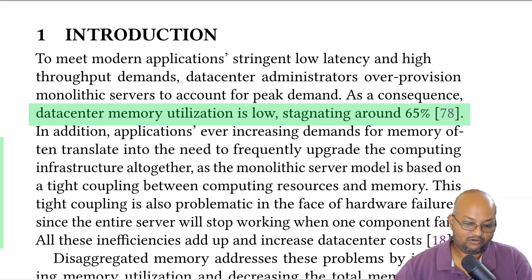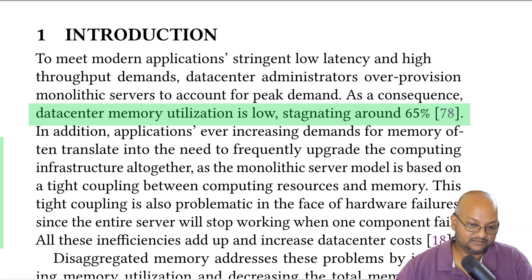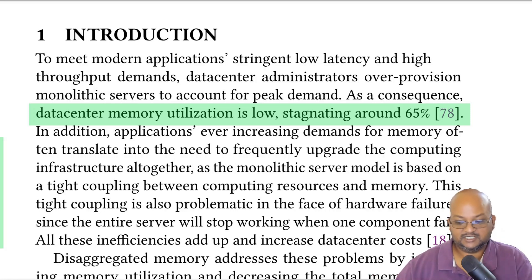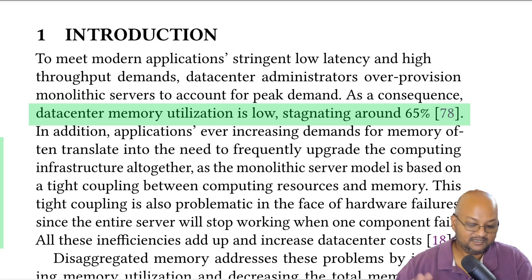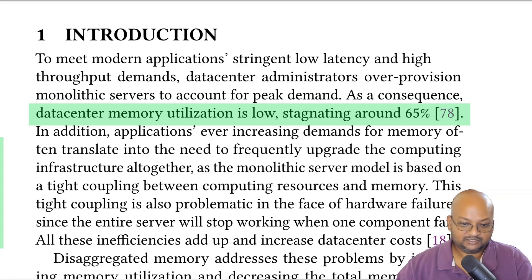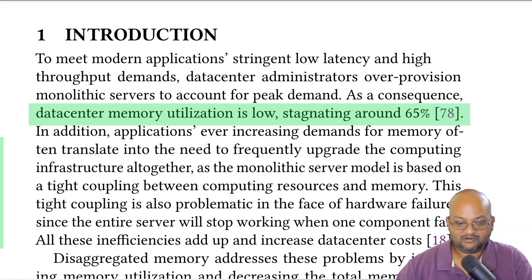Instead of having all your machines have a lot of RAM, CPU, and storage, you have a set of machines that are heavy on CPU but light on other resources, another set of storage machines that are heavy on storage and light on other resources, and a third set of RAM machines that are heavy on RAM but light on other resources. To a large extent, this disaggregation has already played out for CPU and storage — almost all storage in modern data centers is already remote and accessed over the network.